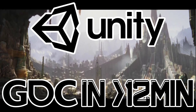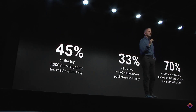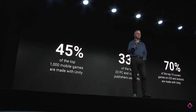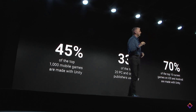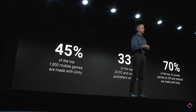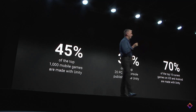They started things off with some stats to showcase games made with the Unity engine. A couple of stats shocked me: 45% of the top 1000 mobile games are made using Unity, 33% of the top 20 PC and console publishers are using Unity, and 70% of the top 10 current games on iOS and Android are made with Unity — some interesting statistics.